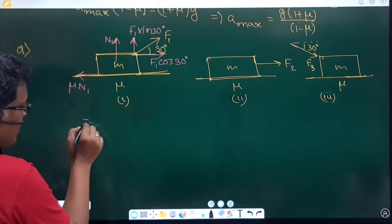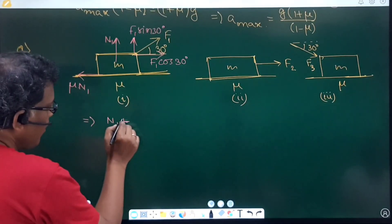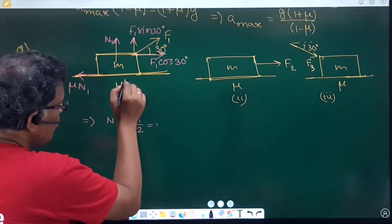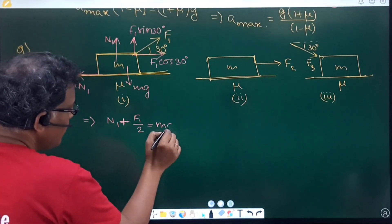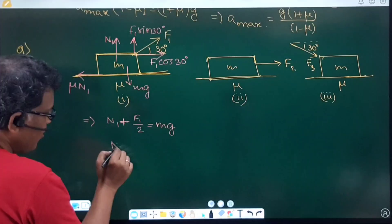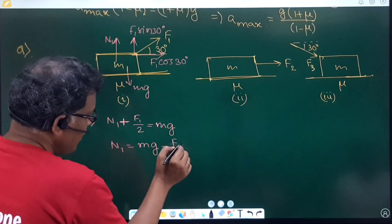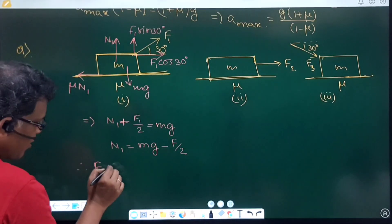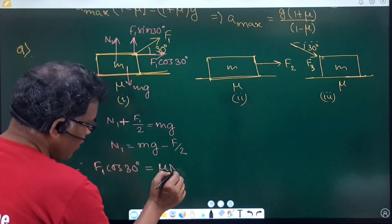So, argument wise, I can write down in this case, N1 plus F1 sin 30. F1 sin 30 means F1 by 2. That is equal to weight of the block Mg. So, here I can write down in this case, N1 is equal to Mg minus F by 2. Therefore, the applied force which is F1 cos 30 at limiting equilibrium need to be equal to mu N1.